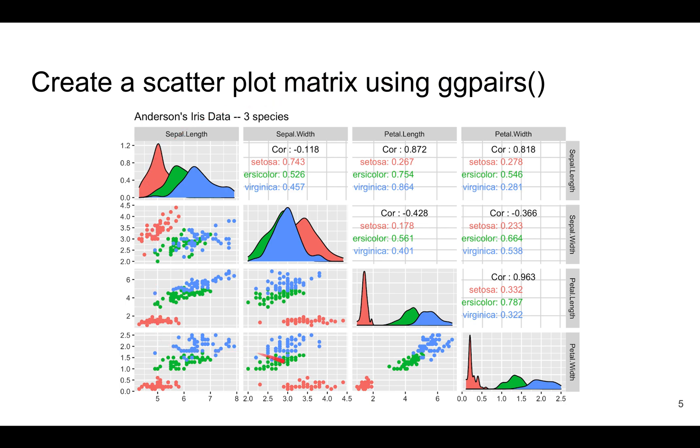You can see 16 different rectangles. The diagonal entries are basically density plots, which is something like a histogram of the different columns. So this is the density plot of sepal length, this is a density plot of sepal width, and so on.